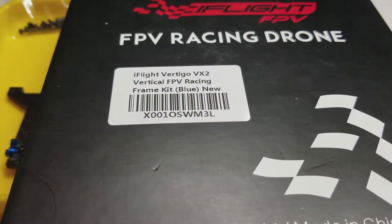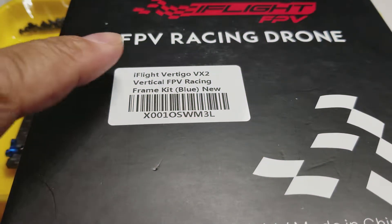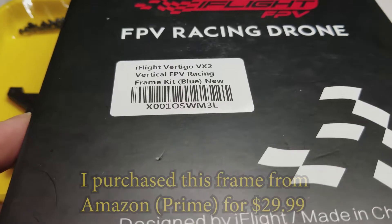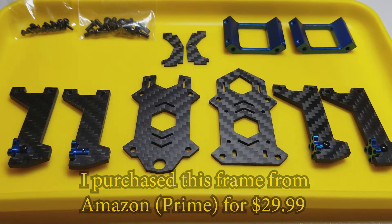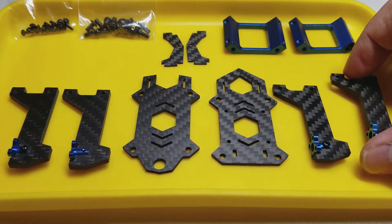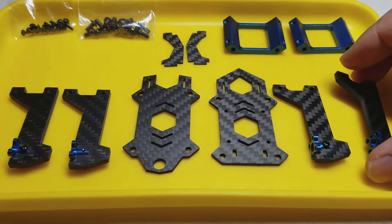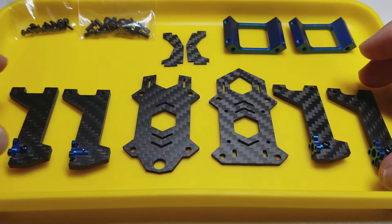Hello all, today I am reviewing the iFlight Vertigo VX2 Vertical FPV Racing. And this caught my eye because of that vertical word right there. These arms are vertical and that's what is very interesting in a 2.5 inch prop build.